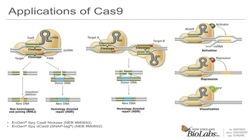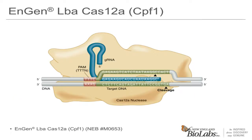In addition to S. pyogenes Cas9, there are many different Cas enzymes that have different properties. One that we have recently released is LbCas12a, also known as LbCpf1, which has a different PAM sequence requirement than SpCas9. That opens up more targeting opportunities in AT-rich genomes. Cas12a also differs from Cas9 in that it leaves a 5' overhang on the 5' side of the protospacer sequence, and only requires a short CRISPR RNA — no tracer RNA is needed.